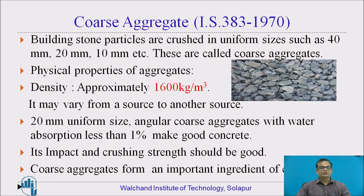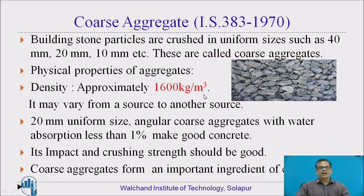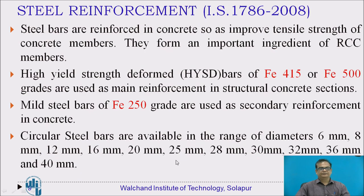Coarse aggregate consists of coarser particles. As per IS 383, the specifications are given. Building stones are crushed and their particles are formed, with sizes of 40 mm, 20 mm, 10 mm, etc. — these are called coarse aggregates. Physical properties of aggregates: density is approximately 1,600 kg per cubic meter, which may vary from source to source. Generally, 20 mm aggregate size is used for making concrete. Coarse aggregate should be angular, and water absorption should be less than 1% for making good concrete. Its impact and crushing strength should be good.